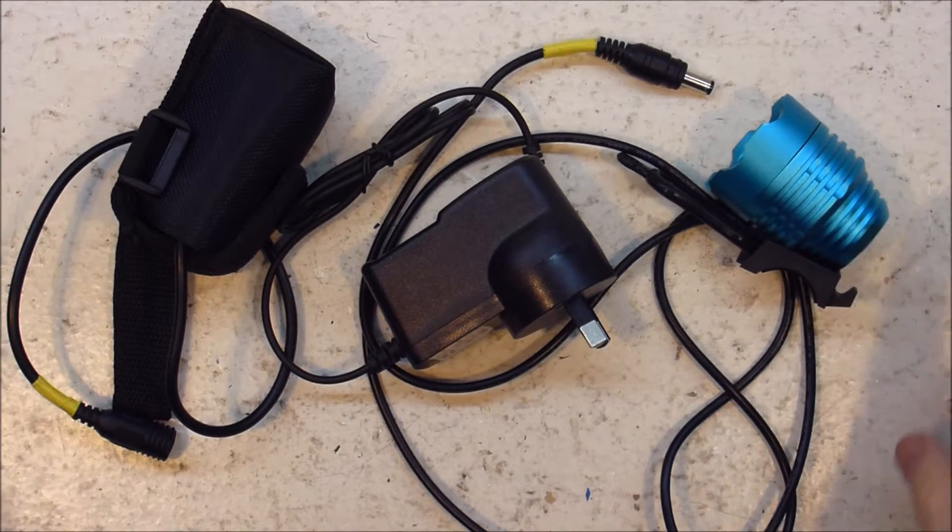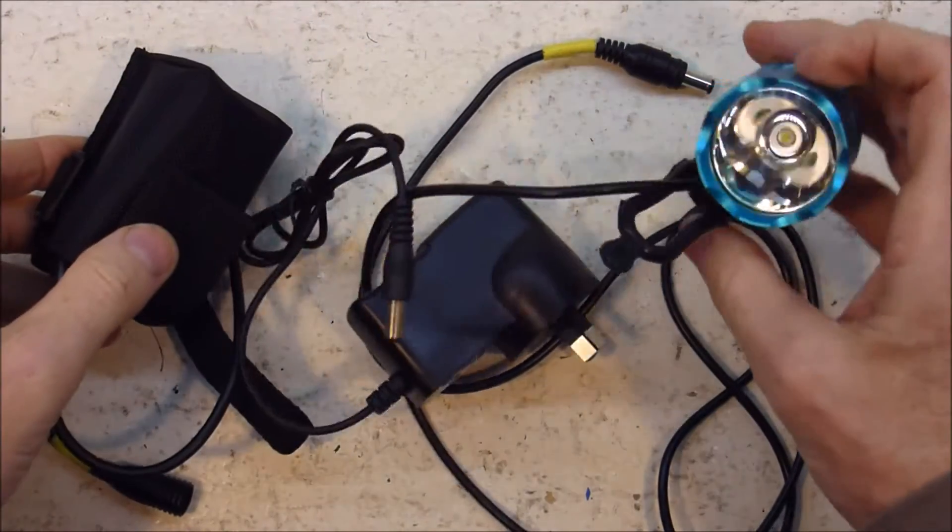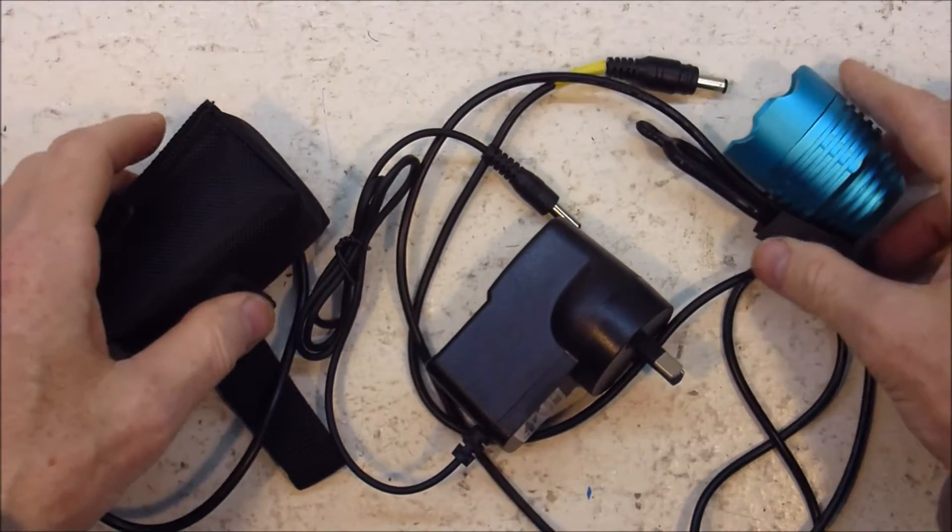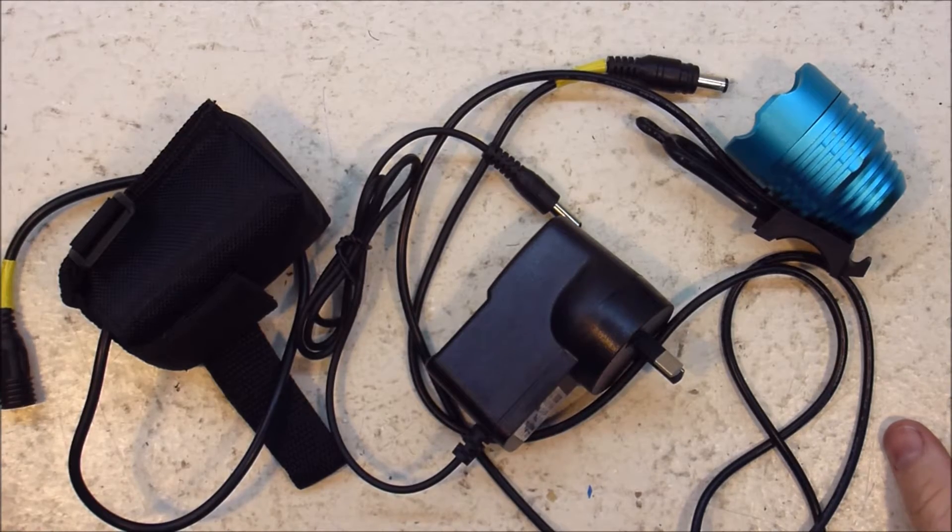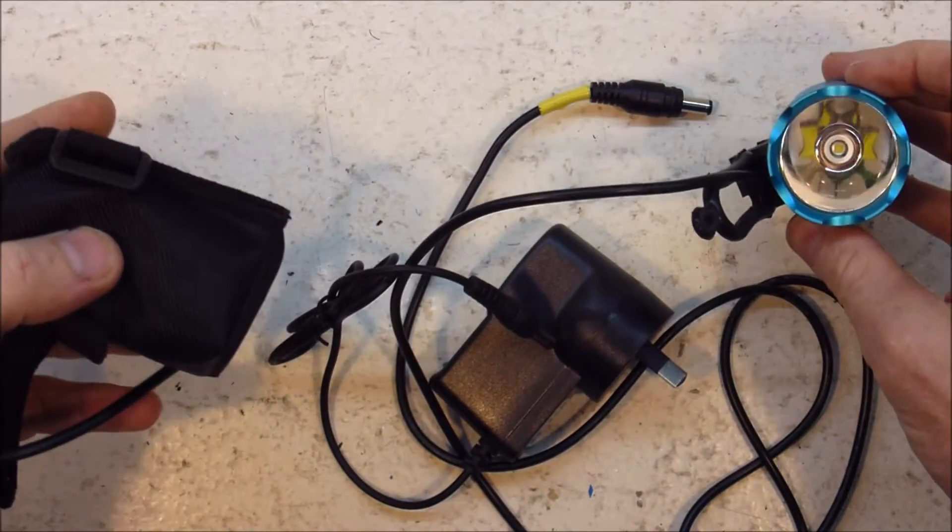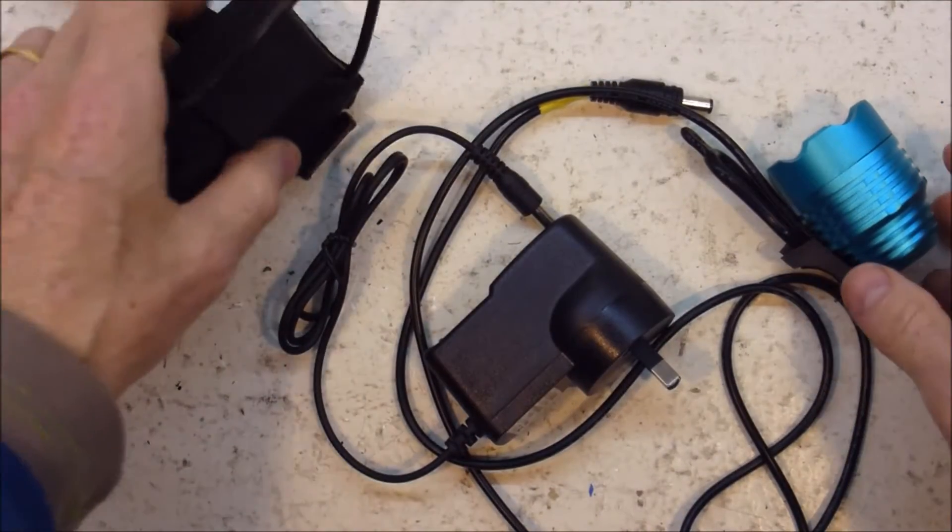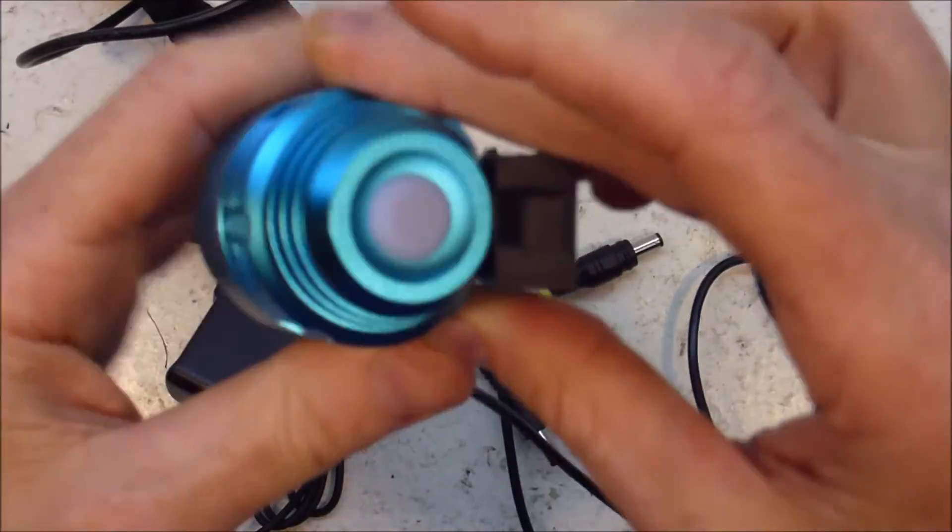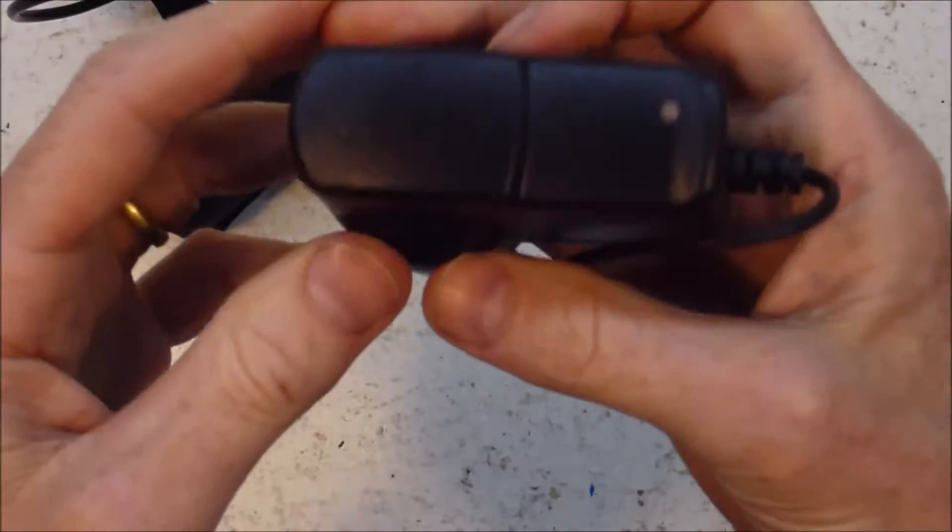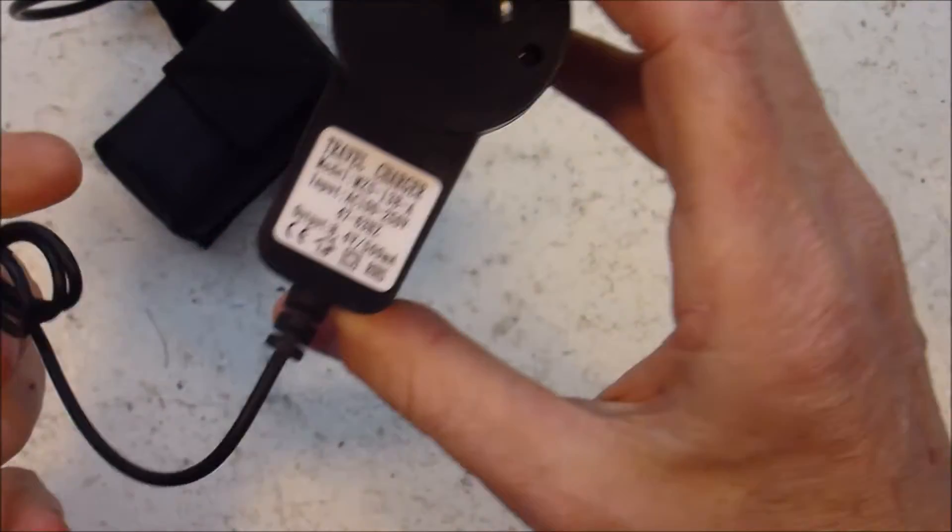Someone has asked me to see if I can repair this bike light that they had. It's supposed to last for 4-6 hours and apparently it's only lasting 45 minutes. Let's have a look and see what we can see. It doesn't have any brand on it, so I'm assuming it's a cheap Chinese system.